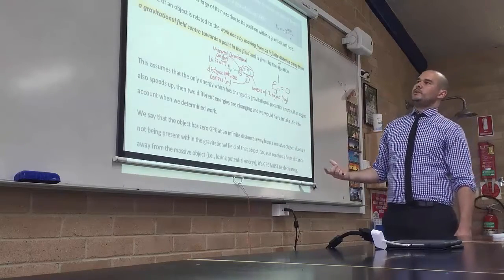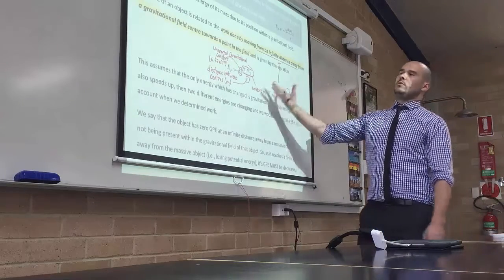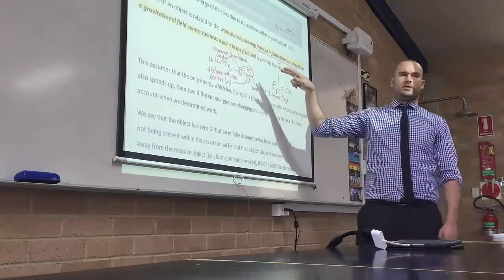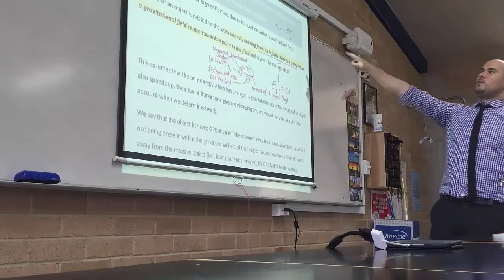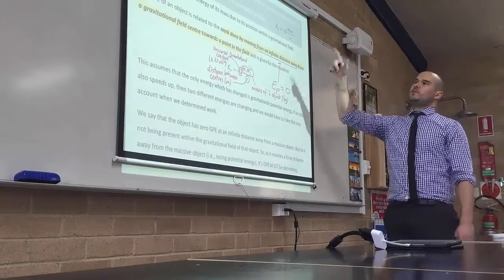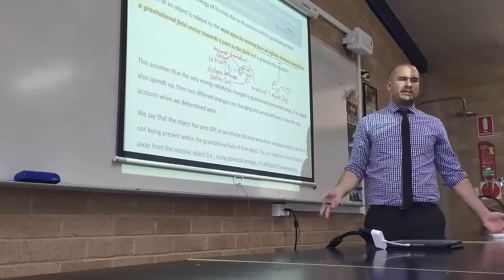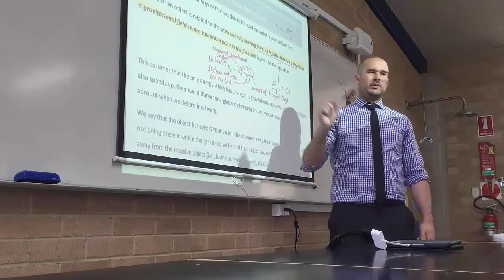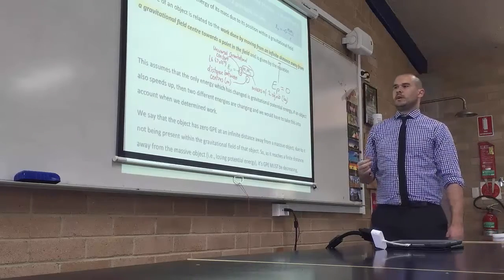So we've got a definition, we've got an equation and we talk about proportionality. So where it says a GPE of a body is energy of its mass due to position within a gravitational field, whilst that is true, I would not want you to write that as your definition of GPE. GPE does depend where you are, but I want us to define it as that following one of the work done to move an object from a very large distance away to a point in a gravitational field. Which probably makes next to no sense apparently, but when we talk a little bit more about work, you'll see why GPE is defined as that.